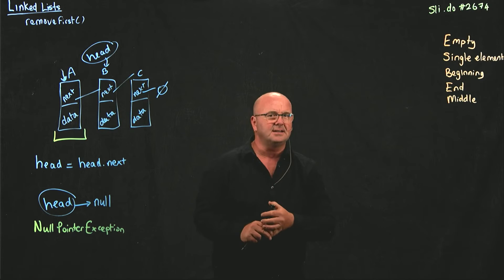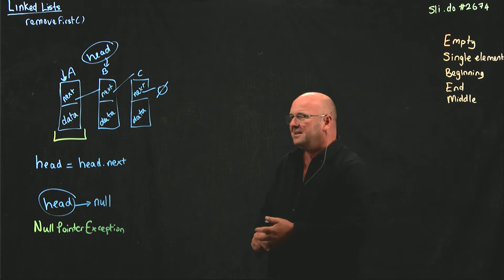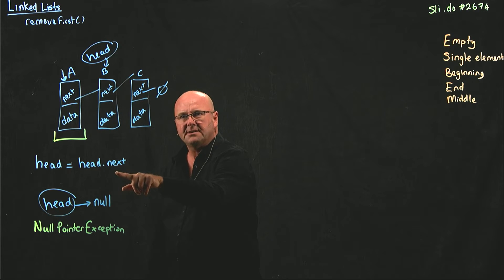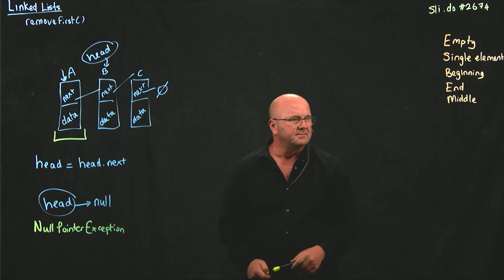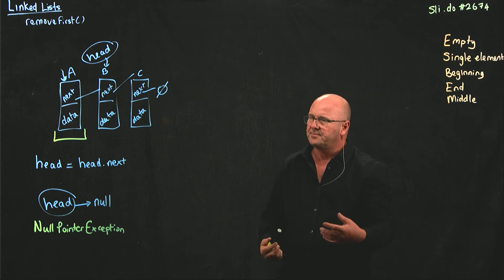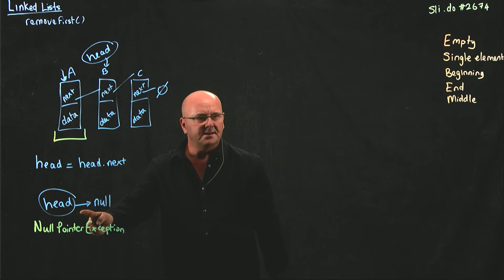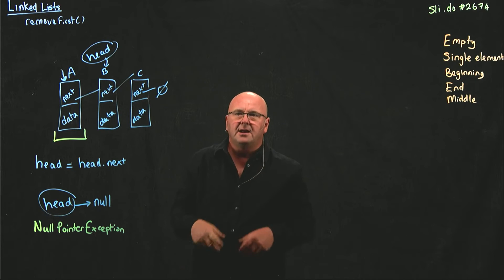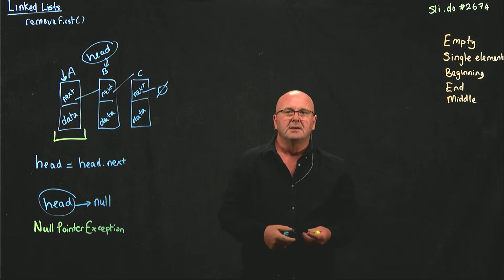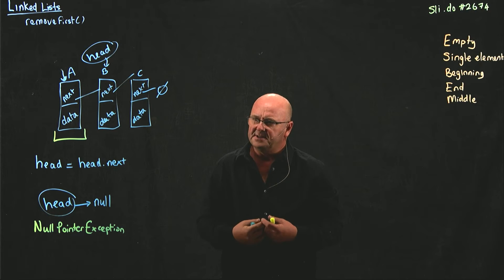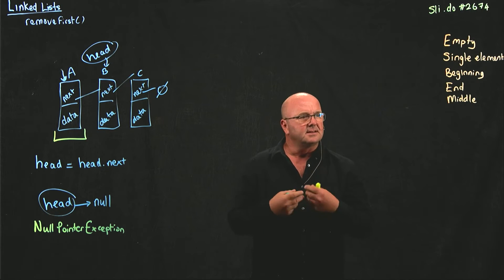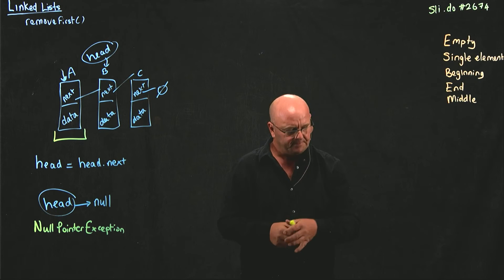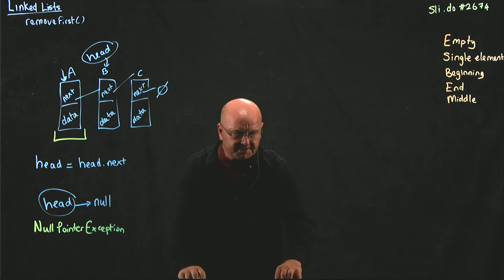If you haven't seen this error yet, I'm sure you will. What this means is that you've got something that's null — in this case head — and you're trying to dereference the variable next from it. You can't do it because head is null. So if our list is empty, we can't set head equal to head.next, and we've got nothing to return. The documentation says this method will return the first element in the list, but if the list is empty, we'll return null. So for this method, we can just return null.